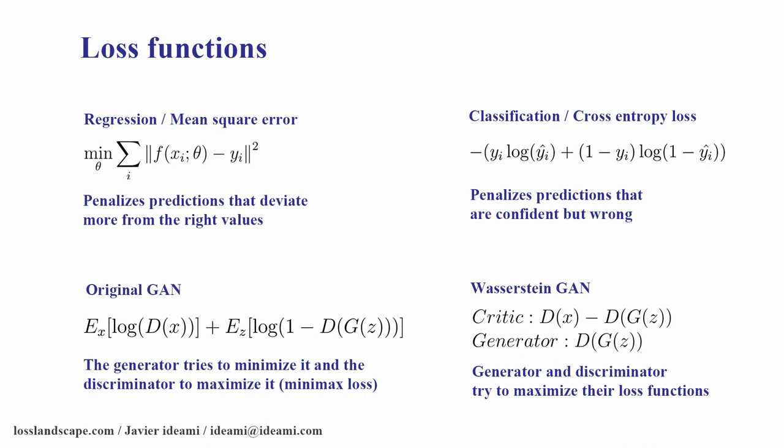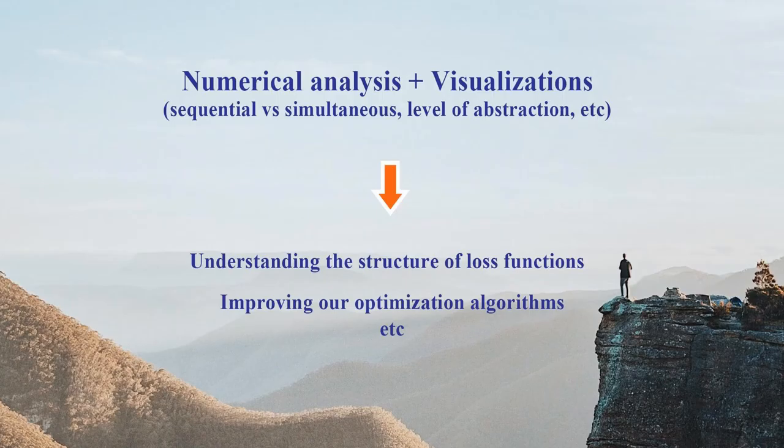We can use many different functions to measure network performance. For example, if we are doing regression, we may work with mean square error, which penalizes predictions that deviate from the right values. If we are classifying images, we may use cross-entropy, which penalizes confident but wrong predictions. If we are working with GANs, we may deal with the minimax game between the generator and discriminator. If working with a Wasserstein GAN, the generator and critic try to maximize different functions. Overall, the loss function is trying not only to measure performance, but to find the most efficient way to push those weights in the direction of our objective.